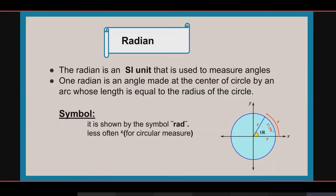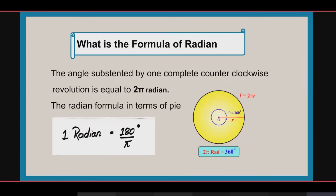What is a radian? A radian is basically an SI unit which is used to measure angles. One radian is the angle made at the center of the circle by an arc whose length is equal to the radius of the circle. As you can see on the diagram on the slide, there is an arc of length r and a radius r. It is noted by the symbol 'rad' or a small superscript 'c'.